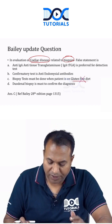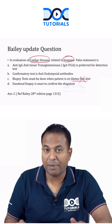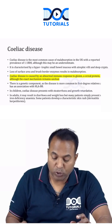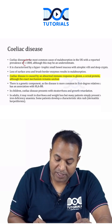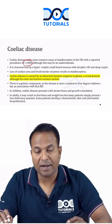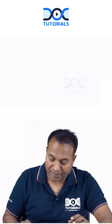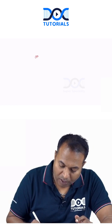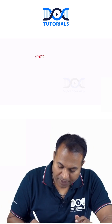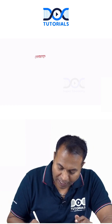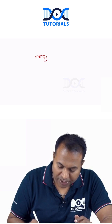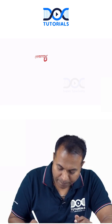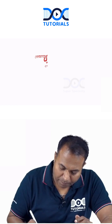Celiac disease is a very rarely seen condition in India but is the most common malabsorption disorder in the UK, with an incidence of 1 in 1800. It is characterized by the classical microscopic finding of atrophy of the villi and hypertrophy of the crypts in the intestinal mucosa.